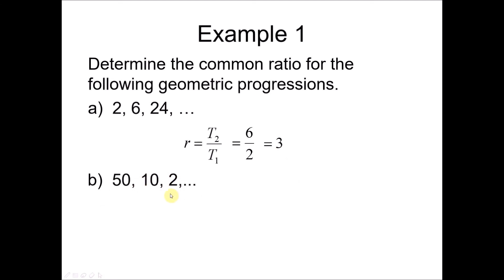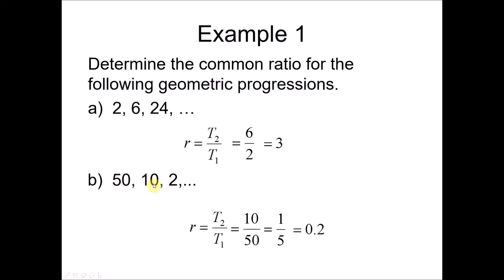Next example: 50, 10, 2. We want to find the common ratio. Take the second term divided by the first term: 10 divided by 50 gives 1 over 5, which is 0.2. The common ratio can be in fraction or decimal form and can be less than 1. When r is less than 1, like 0.2, the values decrease. When r is greater than 1, like 3, the values increase. Multiplying 10 by 0.2 gives 2, and so on.